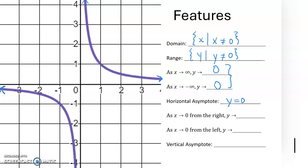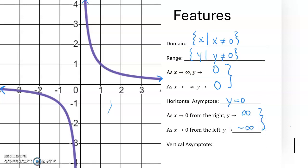As x gets close to 0 from the right side, the y-coordinates are shooting up to infinity. As x gets close to 0 from the left, the y-coordinates are shooting down towards negative infinity. When y-coordinates go to infinity like that, this is a vertical asymptote — at x equals 0, we have a vertical asymptote because the values of the function are approaching infinity.